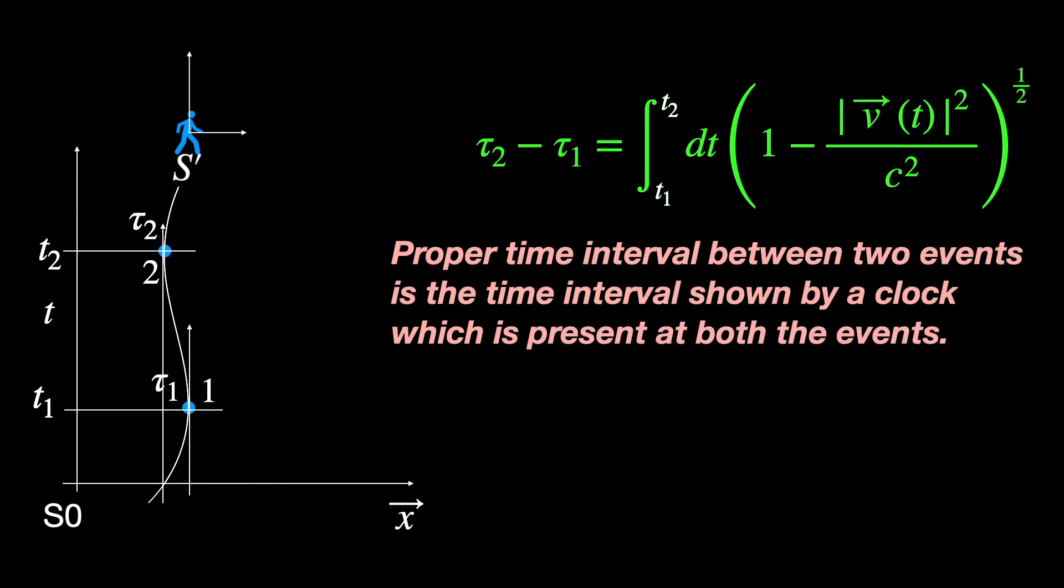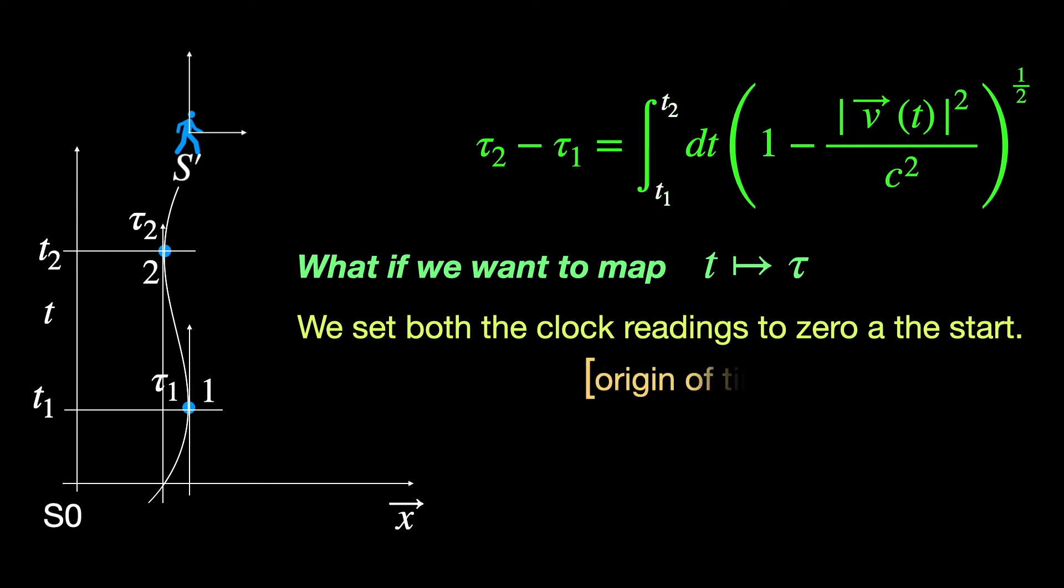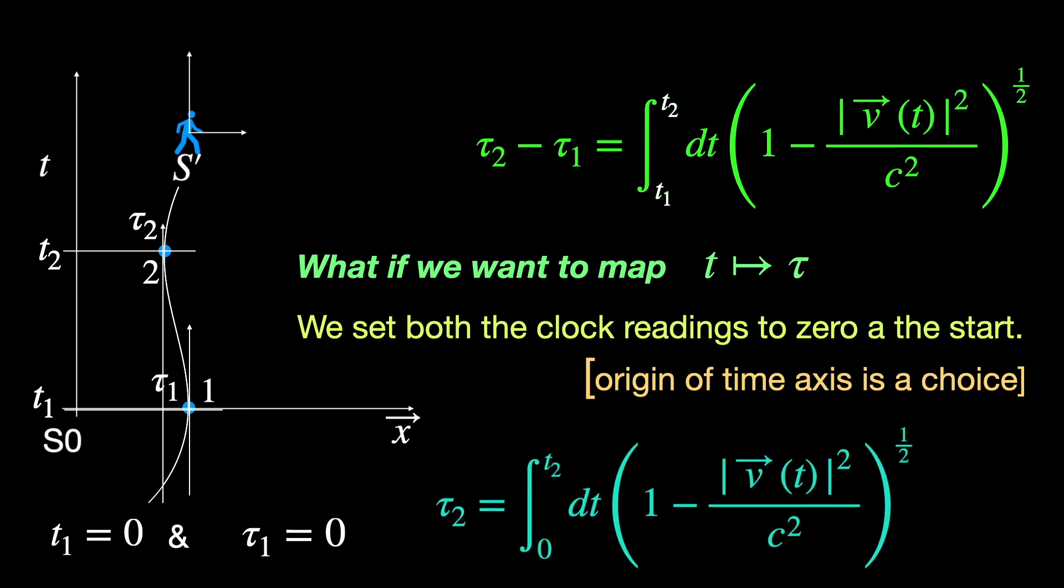But instead of time intervals, if we are interested to map that moving guy's clock readings, that is his proper time, to our coordinate time just one-on-one, all we need is to set both the clock readings to zero at the start of our observation. Since choosing the origin in any coordinate axis is a matter of choice, we can do that for the time axis as well. Let's see how that works in action. We choose to set event one as the start of our observation and set both tau1 and t1 to zero. Then the relation gives us the clock readings tau2 of the moving guy in terms of our coordinate time reading t2. In fact, there was nothing special about either event 1 or event 2 except for the fact that they are on the world line of this moving guy. So this will work for any event successive to event 1 on the world line of this moving guy. So we can drop the tag of event 2 from this relation and write a general relation connecting the proper time tau of this guy with our coordinate time t.